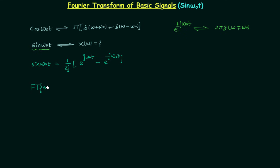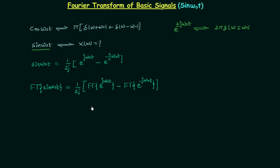On the right hand side we have 1/(2j) times the Fourier transform of e^(jω₀t) minus the Fourier transform of e^(−jω₀t). We have assumed the Fourier transform of sin(ω₀t) equals X(ω), so on the left hand side we have X(ω), and it is equal to 1/(2j).